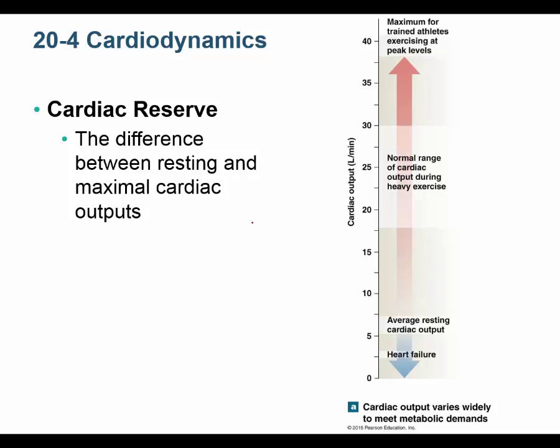For example, if you brought my heart rate up to 180 beats per minute now, I'd be in some danger — but when I was younger I'd reach 220 beats per minute running on a treadmill with no problem. Cardiac reserve decreases with age, and increasing it is part of athletic conditioning.